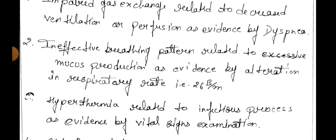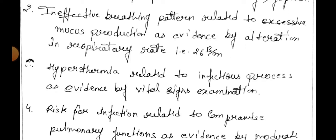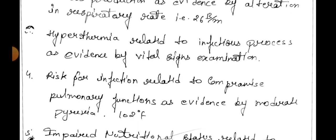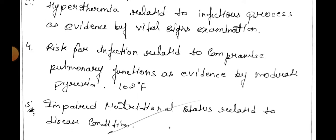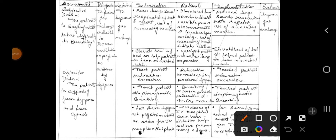Second diagnosis is ineffective breathing pattern related to excessive mucus production as evidenced by alteration in respiratory rate — that is 26 breaths per minute. Third diagnosis is hyperthermia related to infectious process as evidenced by vital sign examination. Fourth diagnosis is risk for infection related to compromised pulmonary function as evidenced by moderate pyrexia, i.e. 102 degrees Fahrenheit. The fifth diagnosis is impaired nutritional status related to disease condition.